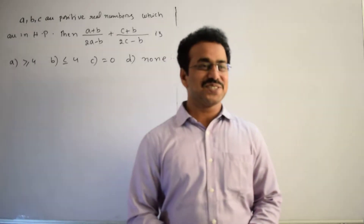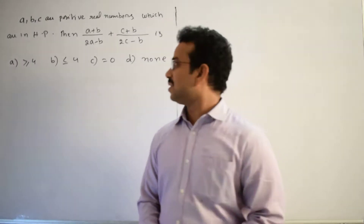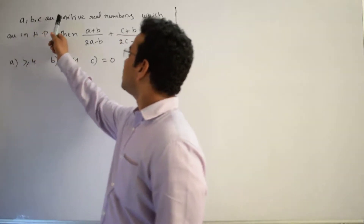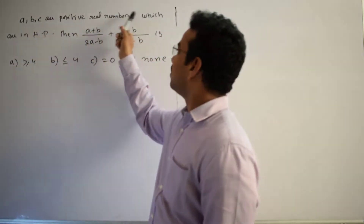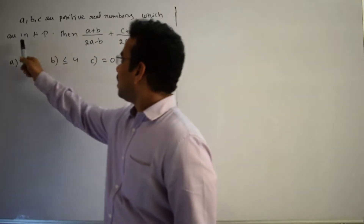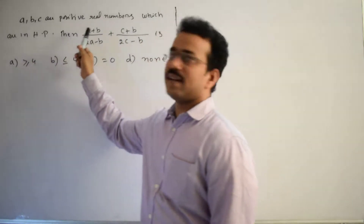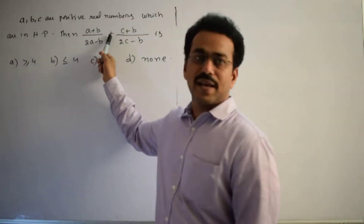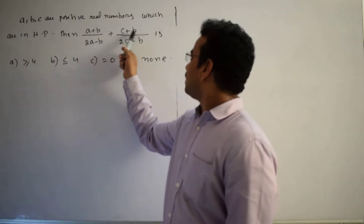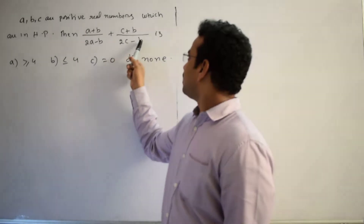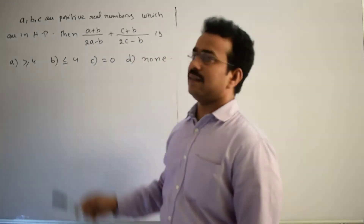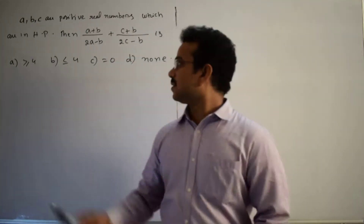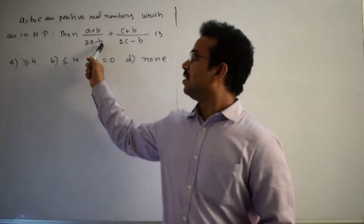Let's discuss the solution of the new question. A, B, C are positive real numbers which are in HP. Then evaluate the expression: (A + B)/(2A - B) + (C + B)/(2C - B). Our task is to evaluate this expression.